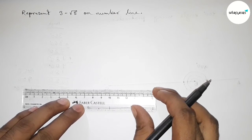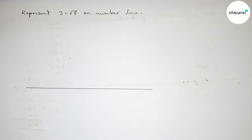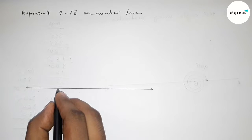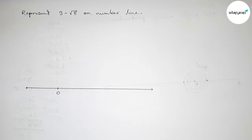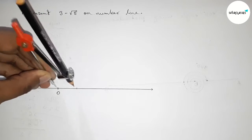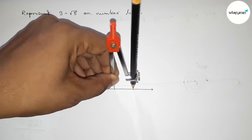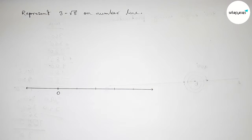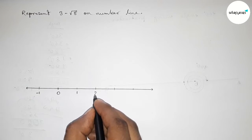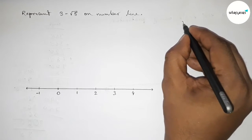First of all we have to draw a number line. Drawing a line of any length with arrow marks on both sides and taking number zero. Using a compass, marking the numbers on the line where the length between any two numbers is one unit length. Taking this side: minus 1, 1, 2, 3, 4.